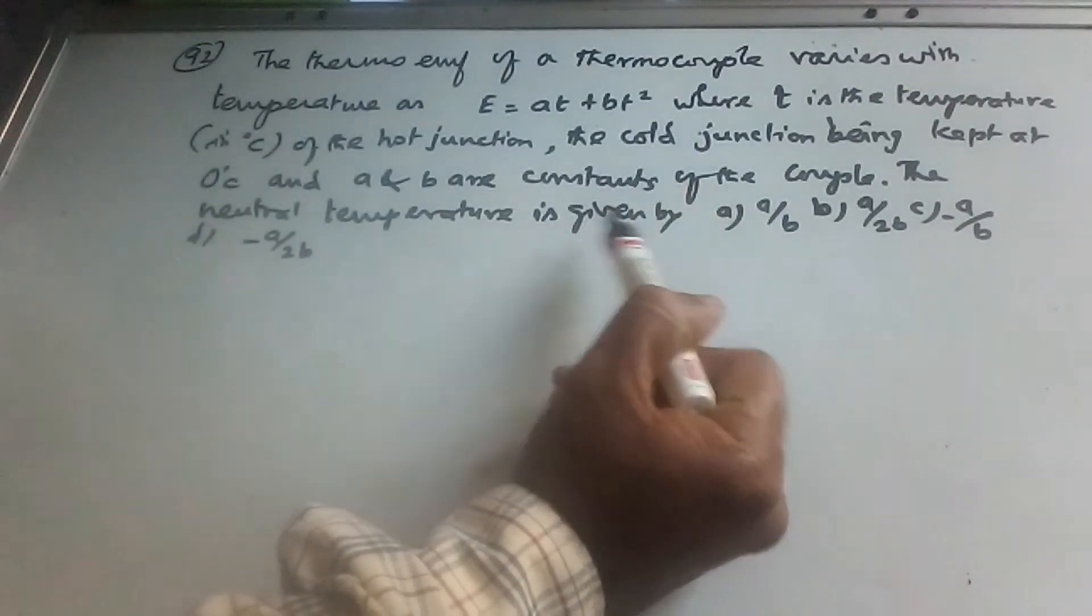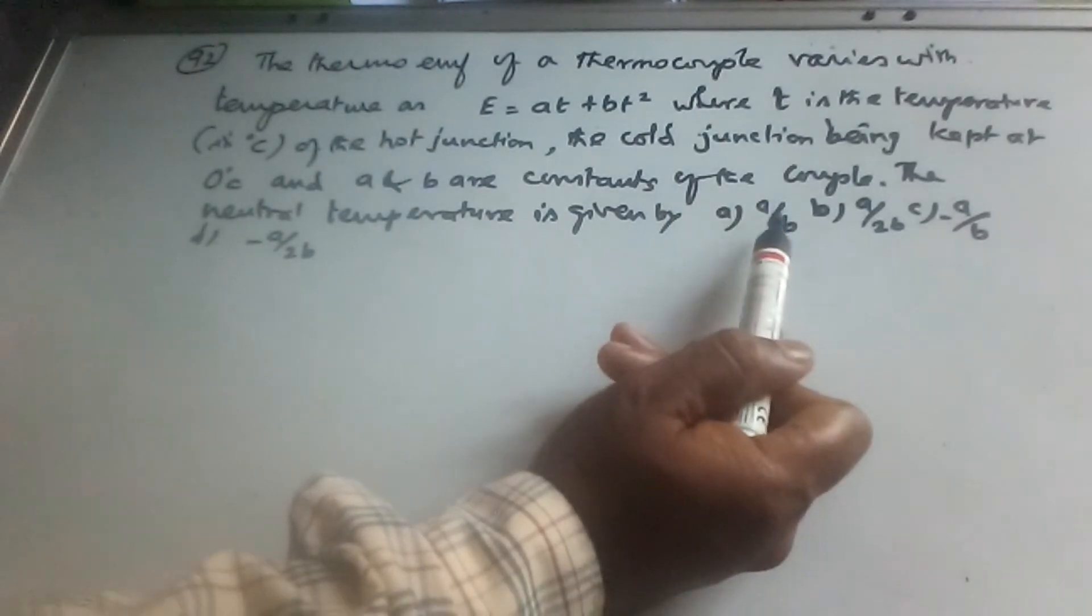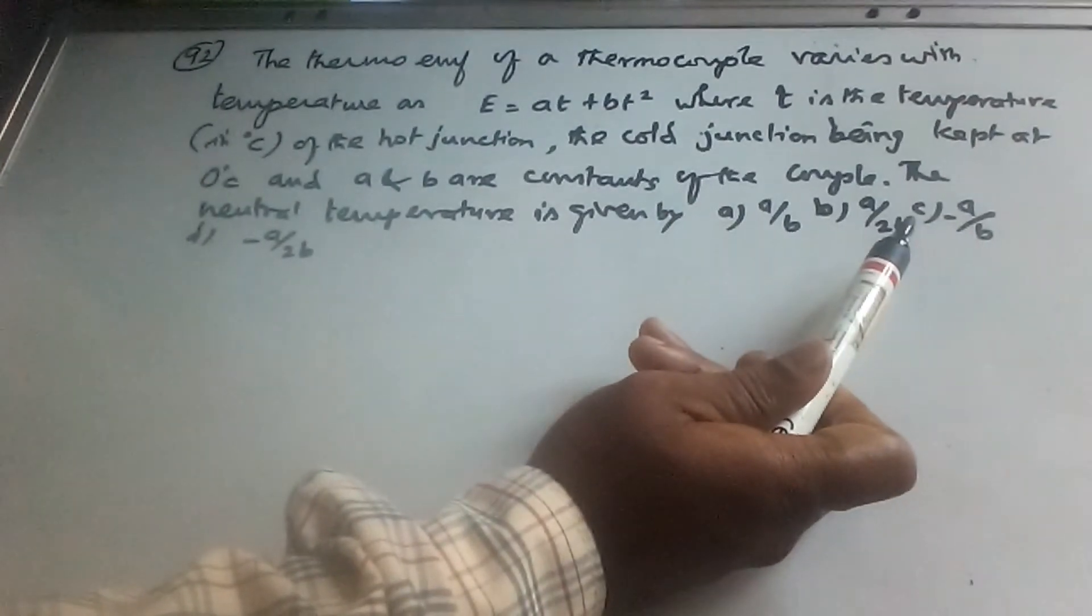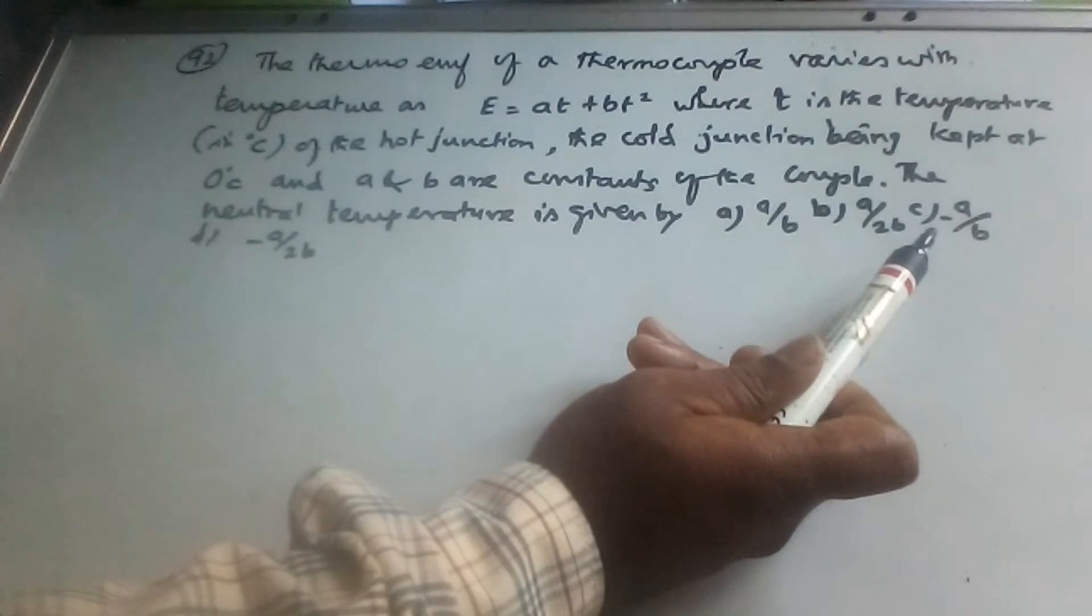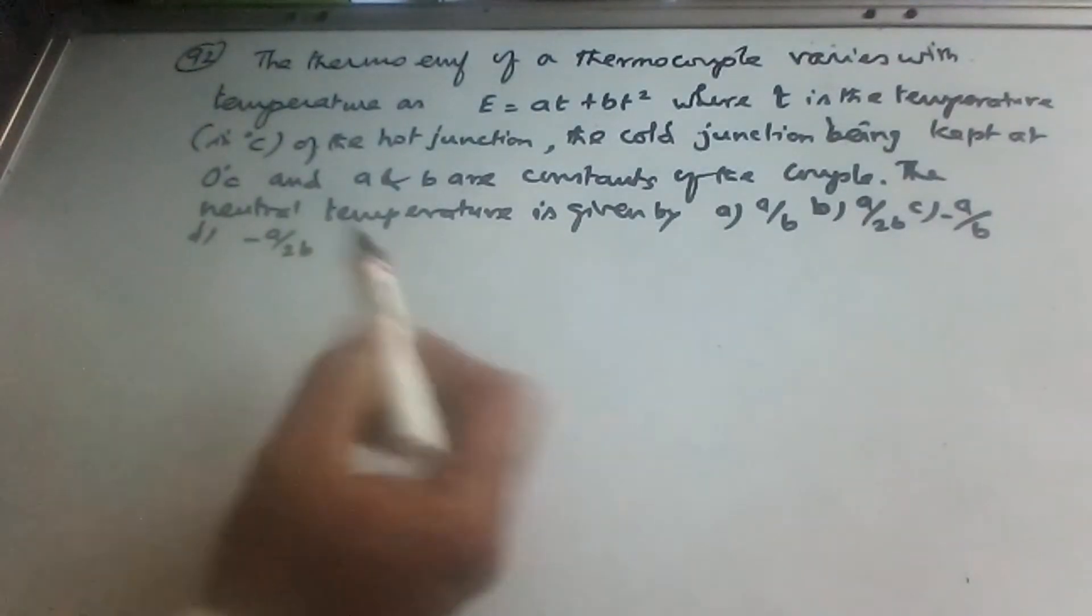A and B are constants of the thermocouple. Neutral temperature is given by options: A equal to A by B, B equal to A by 2B, C equal to minus A by B, and D equal to minus A by 2B.